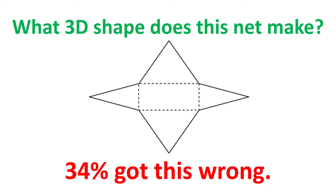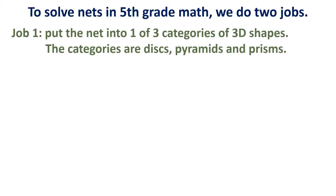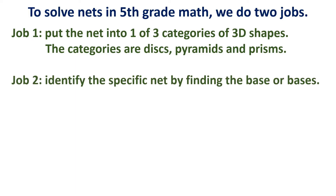A typical test question on nets will show us a net then ask us to identify the 3D shape that it can make. Here is a method that you may find helpful for 5th grade math. We do two jobs. Job 1 is to put the net into one of three categories of 3D shapes — disks, pyramids, and prisms. Job 2 is to identify the specific net by finding the base or bases.